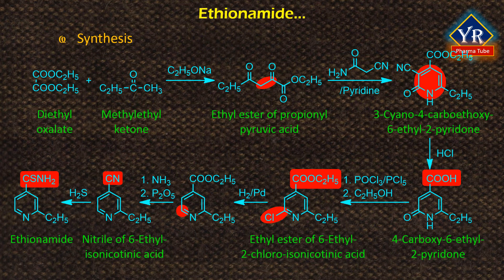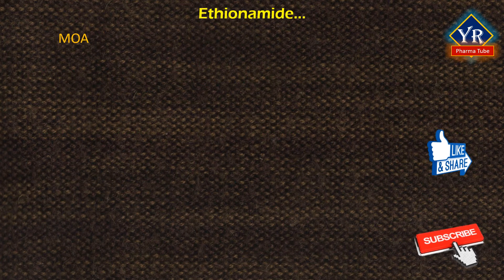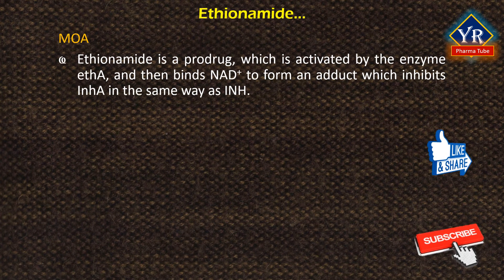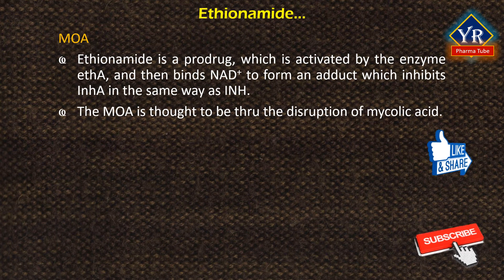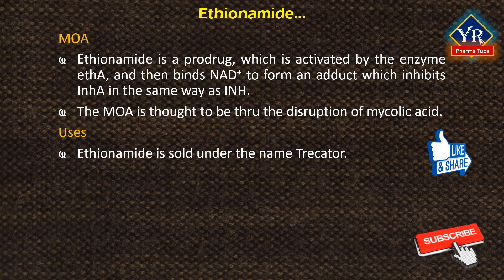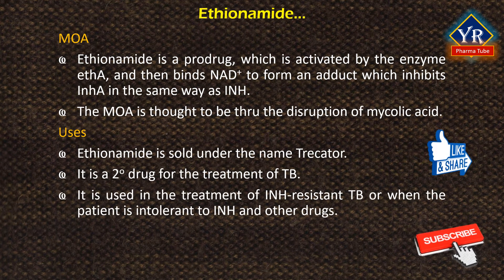Ethionamide occurs as small yellow crystals or a yellow crystalline powder, practically insoluble in water. Mechanism of action: ethionamide is a prodrug which is activated by the enzyme EthA, a monooxygenase in Mycobacterium tuberculosis, and then binds NAD+ to form an adduct which inhibits enoyl-acyl carrier protein reductase in the same way as isoniazid. The mechanism of action is thought to be through the disruption of mycolic acids. Ethionamide is sold under the brand name Trakator and is considered a secondary drug for the treatment of tuberculosis. It is used when patients are intolerant to isoniazid and other drugs, and because of its low potency, the highest tolerated dose is usually recommended.